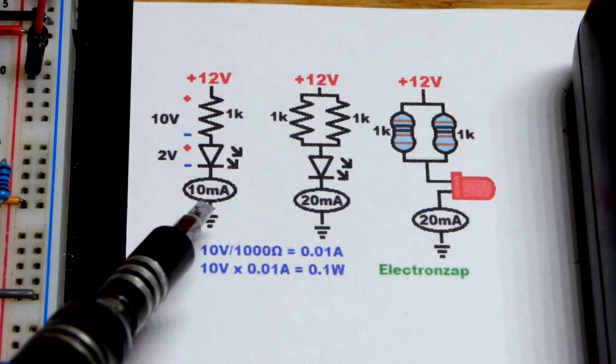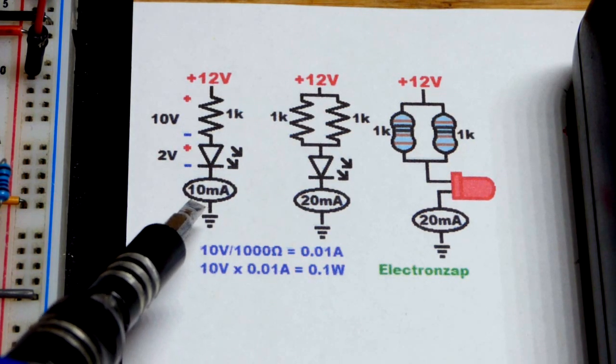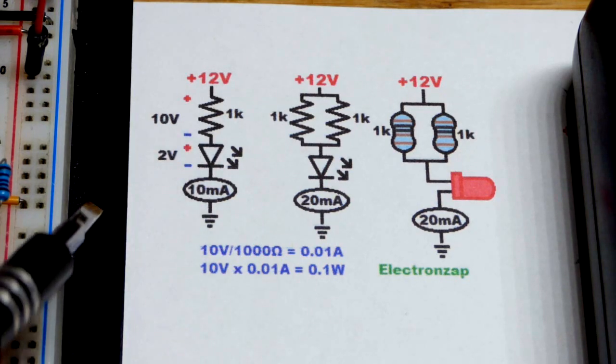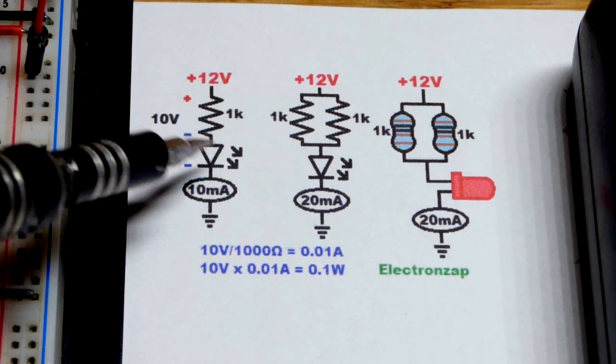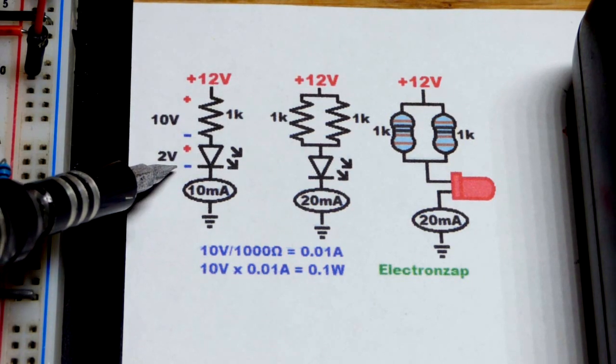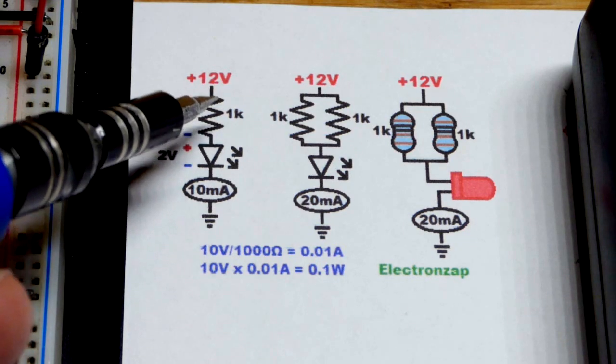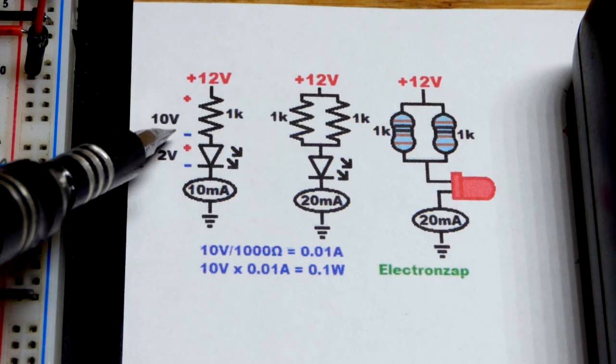That's not going to get you all the way to the 20 milliamp limit of the LED, but it prevents the resistor from overheating. If you have 12 volts, a red LED is probably going to drop about 2 volts from reaching the resistor. After that point, the resistor sets the current through the two of them.